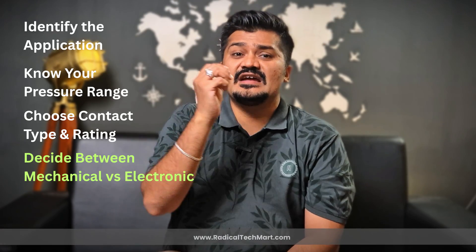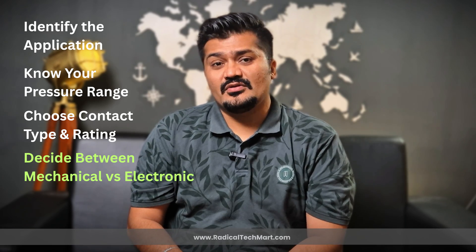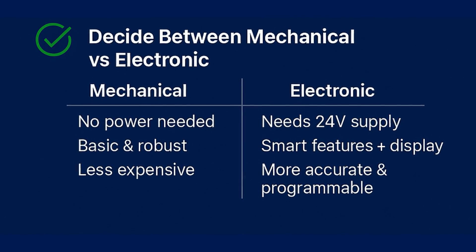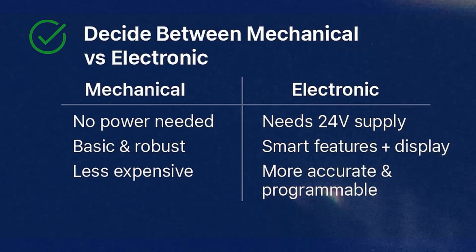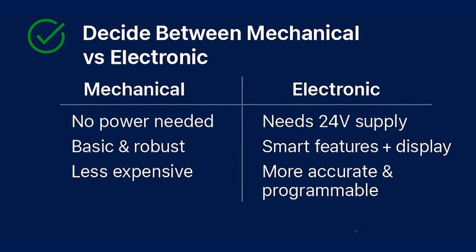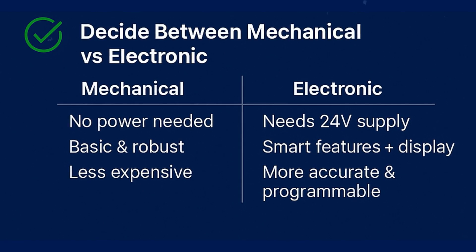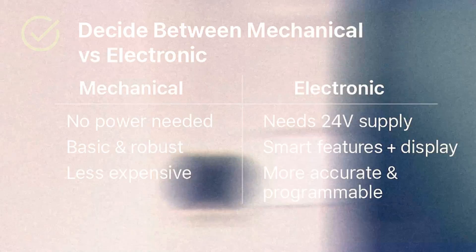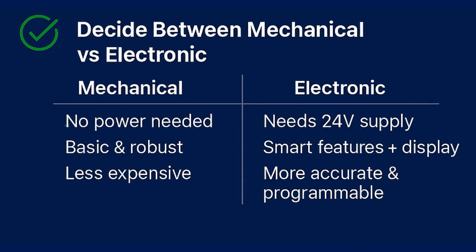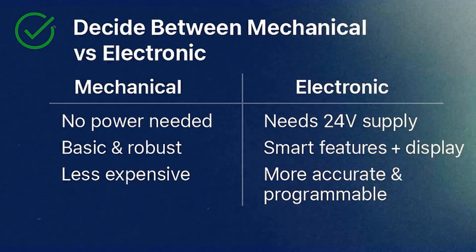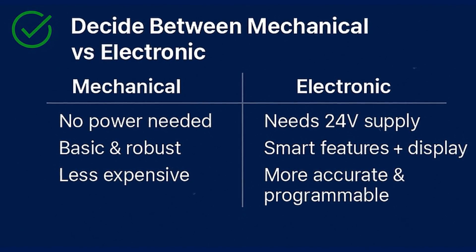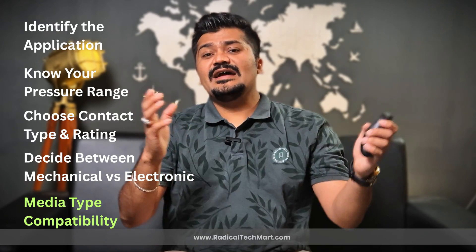Step four: decide between a mechanical or electronic pressure switch. For a mechanical switch, no power supply is needed, while an electronic switch needs a 24V supply. Mechanical is basic and robust; electronic has smart features. Mechanical is less expensive, while electronic is more accurate and programmable.